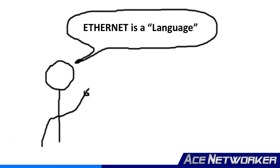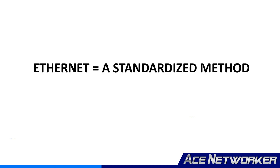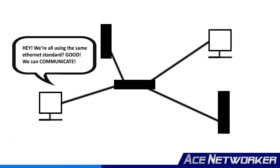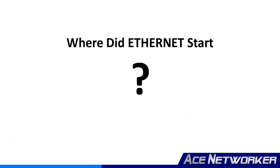Ethernet is often referred to as a language, and this is only partially correct. Ethernet is a standardized methodology protocol that defines how multiple devices communicate with each other on a cable network so they can share data and information. Not only are all devices using a similar language, but they're also using a similar agreed-upon way of communicating — and that's really what Ethernet is all about. So where did Ethernet start, and how did it become the standardized communication protocol on computer networks?